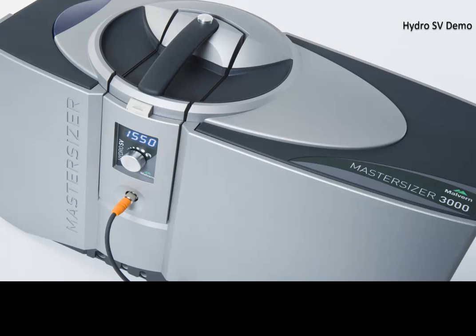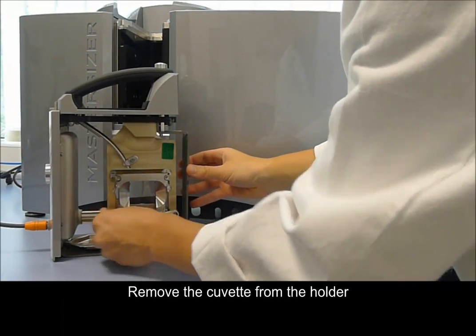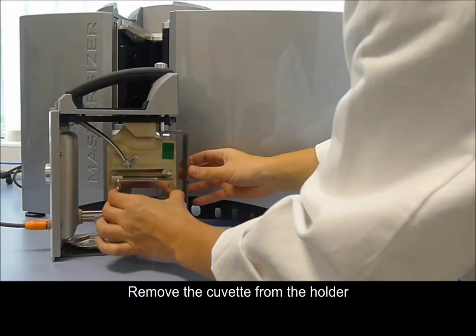In this video we are going to look at a demonstration of the new Hydro SV dispersion unit with the Mastersizer 3000. The dispersion unit is made up of a cuvette which is held within the measurement cell.